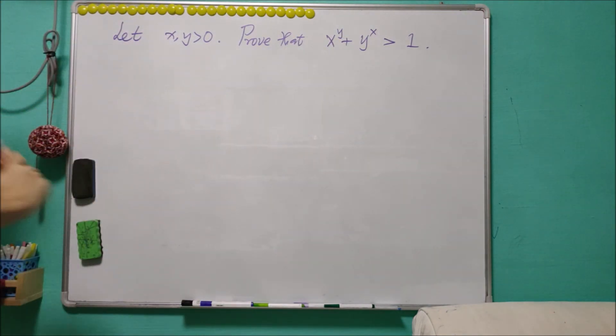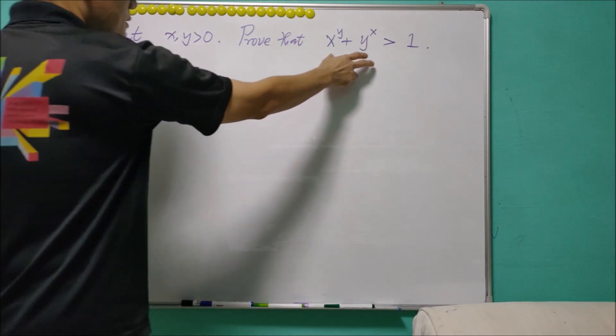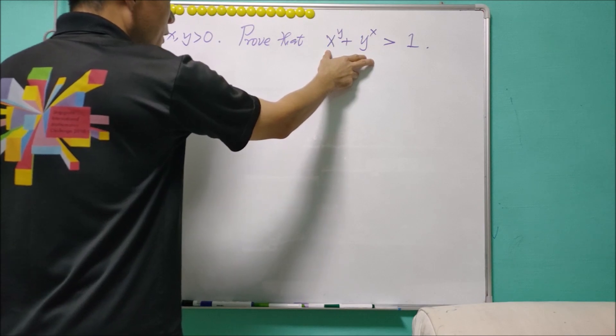So the question is, let x, y be positive real numbers. We ask to prove that x to the power y plus y to the power of x is more than one.